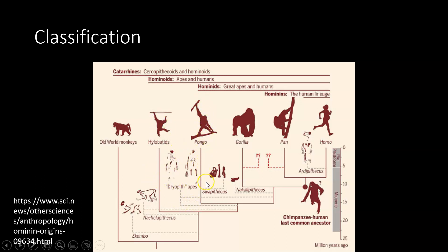Here we have the hominids, which are what we would call the great apes and humans — it includes all of our human ancestors. Hominids are the great apes and humans. Hominins is just this section here — it doesn't include any of the great apes, it doesn't include chimpanzee, which is Pan. What hominins includes is all of the human lineage: Ardipithecus, Australopithecus, and so on. Hominids are great apes and humans; hominins are just the humans and our direct ancestors.